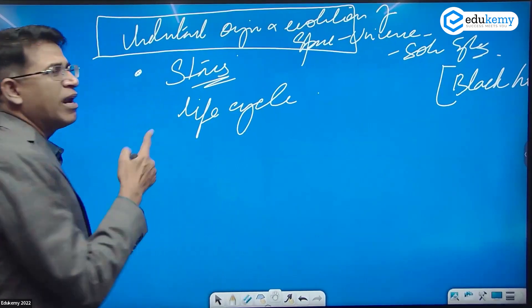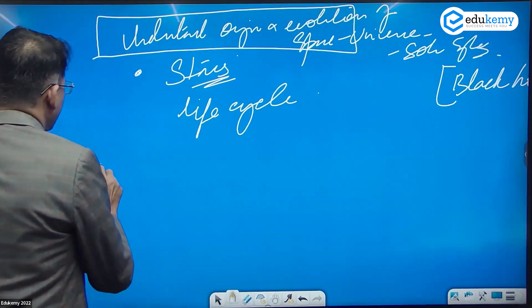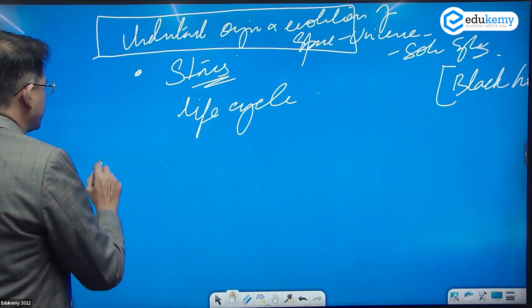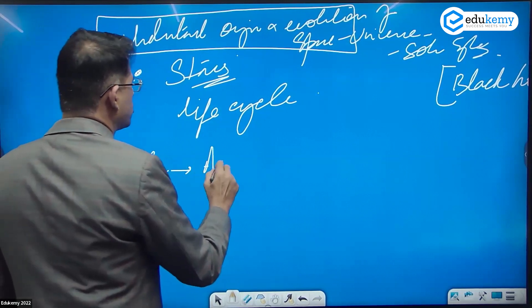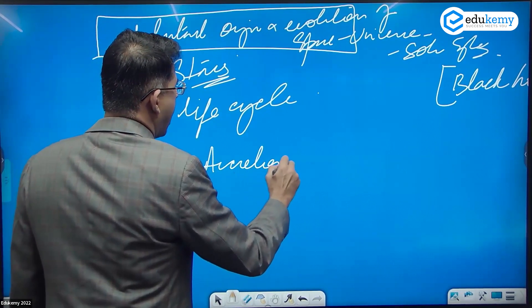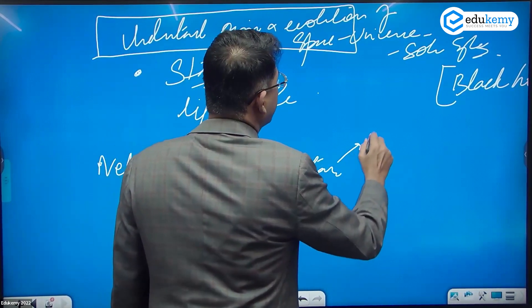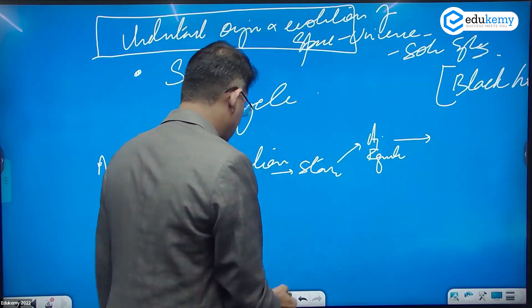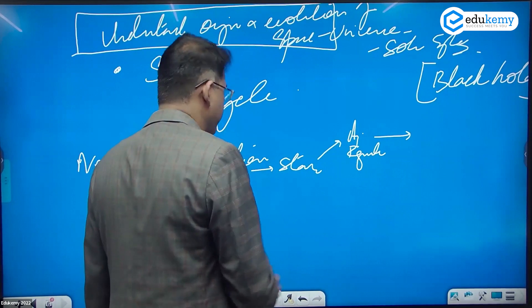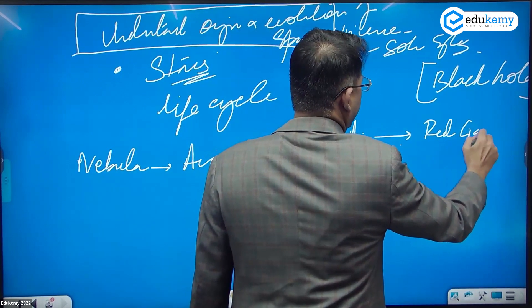Talking about the life cycle of stars, there is a cloud called the nebula. The nebula undergoes accretion and becomes a star. The star can be an average star or a regular star. The average regular star can ultimately die off and become a red giant.